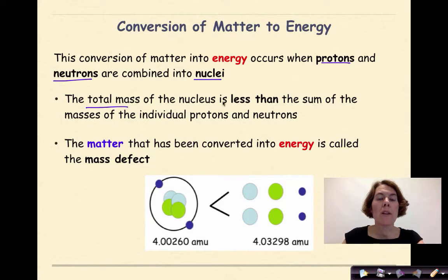The total mass of the nucleus is less than the sum of the masses of the individual protons and neutrons. The matter that has been converted into energy is called the mass defect.